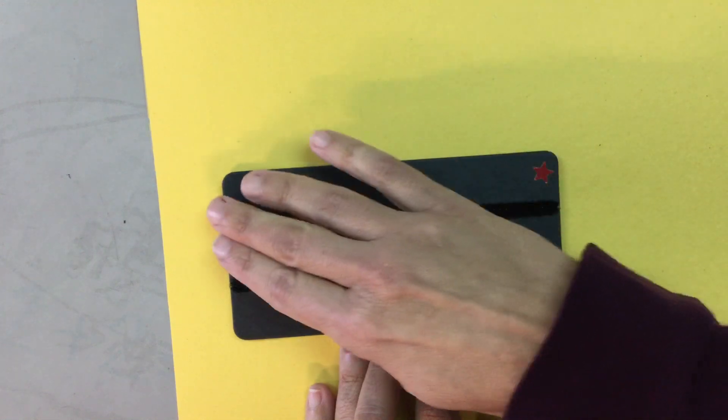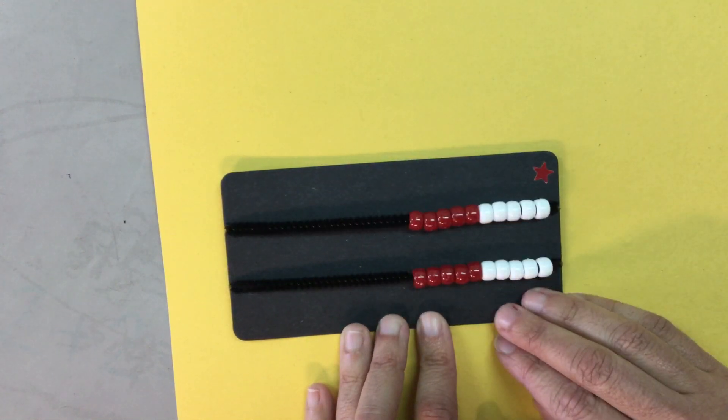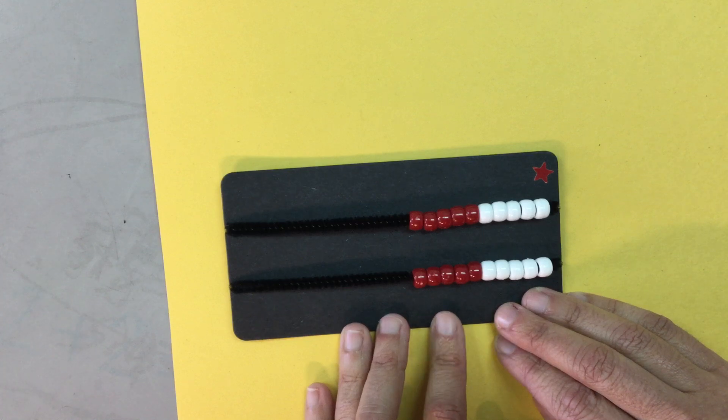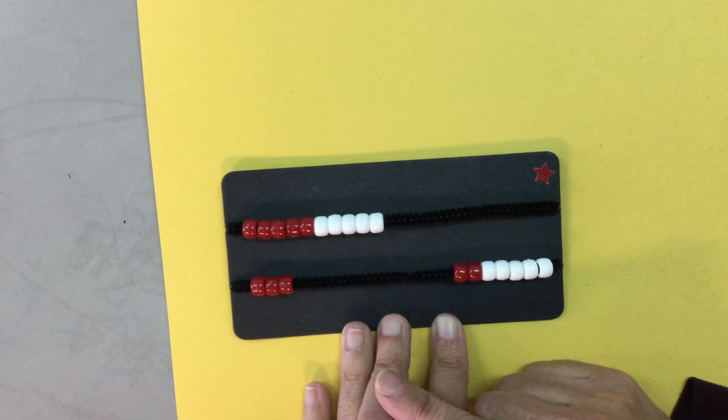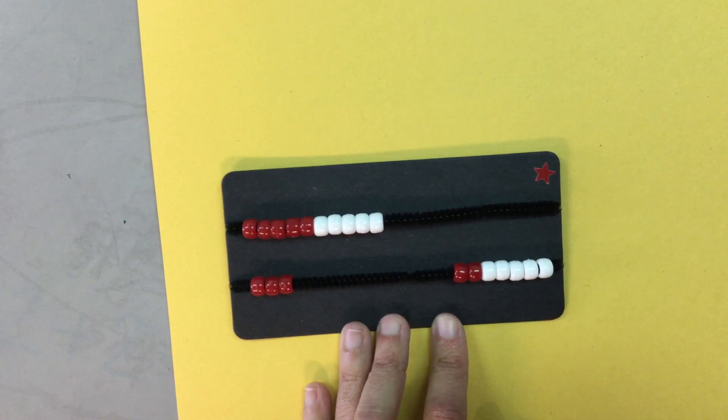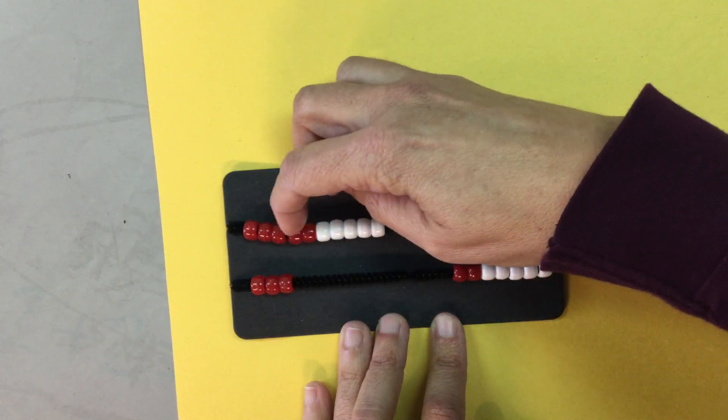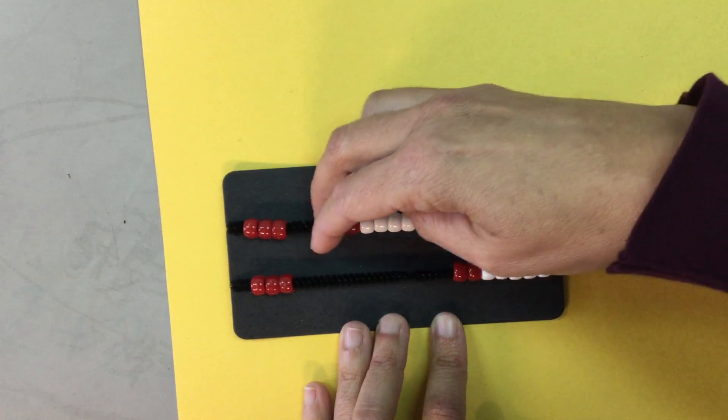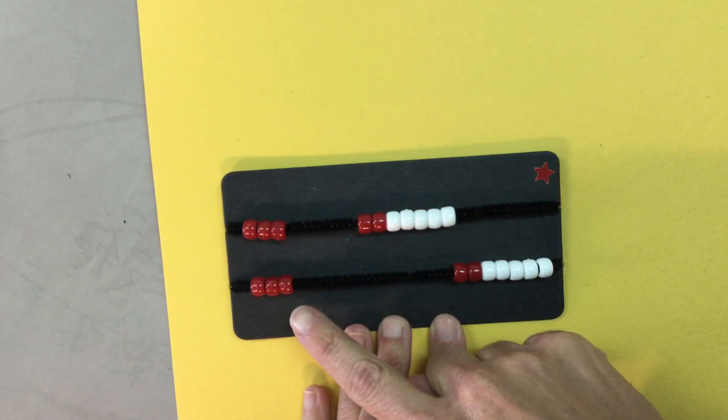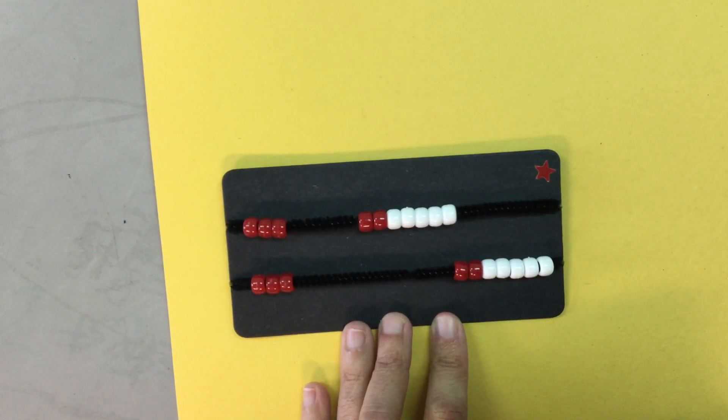Another way to use the number rack is with subtraction. So for example, if my problem is 13 minus 7, I could build 13 as 10 plus three more and then I can take seven beads away. Here's my seven beads that I'm pushing away, five and two more. So I can quickly see that there are six beads left without needing to count back by ones and that's much more efficient, which is our goal.